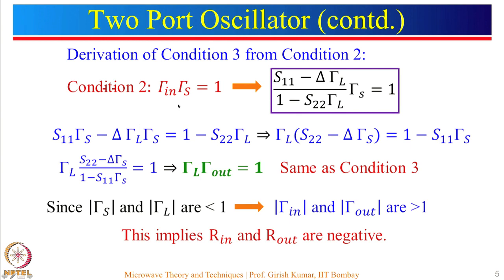Let us see the derivation — we start with condition 2, gamma_n times gamma_s equals 1. We know the expression for gamma_n; substituting it and simplifying, we write S_11·gamma_s − delta·gamma_L·gamma_s, which equals 1 − S_22·gamma_L on the other side. After a few more simplifications we obtain the condition gamma_L times gamma_out equals 1, which is the same as condition 3. So if condition 2 is satisfied, condition 3 will automatically be satisfied.